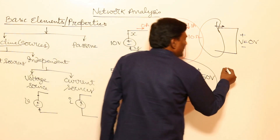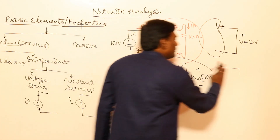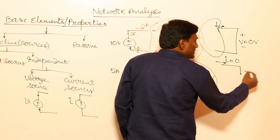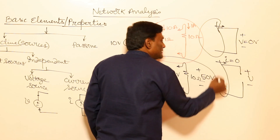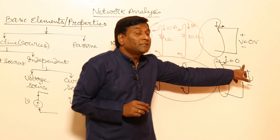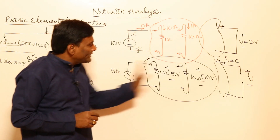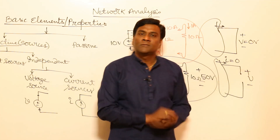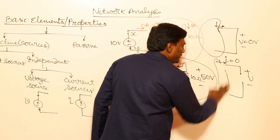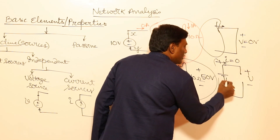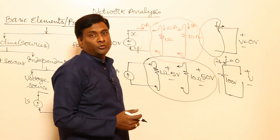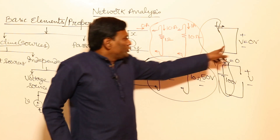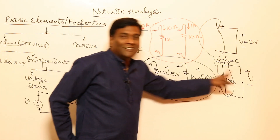Let us think of open circuit. In open circuit, current is 0 — current cannot flow. But voltage will be decided by the connected system. For example, if I connect a battery of 100 volts, voltage across the open circuit is 100 volts, but current is 0. So: 0-volt voltage source is a short circuit, and 0-ampere current source is an open circuit.